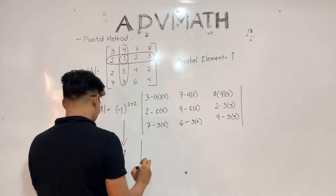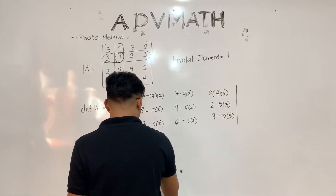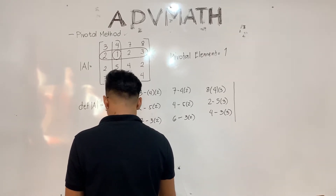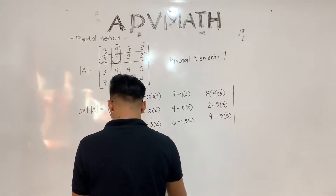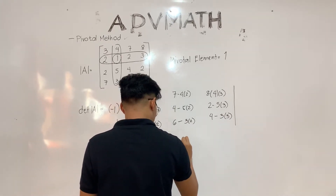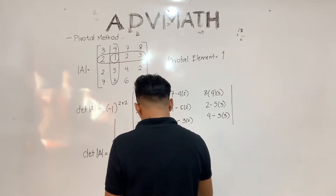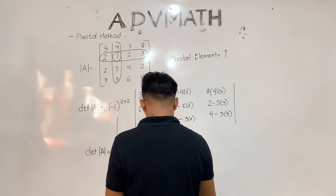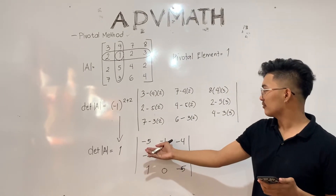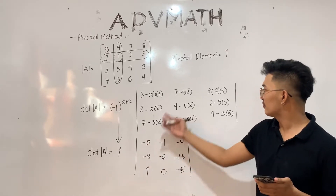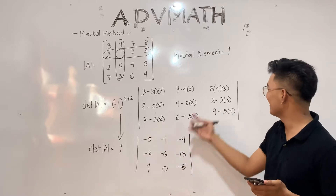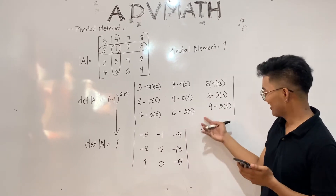We need to carefully solve the 3 by 3 matrix to get the right answer. Use a calculator as much as possible. As we simplify, we will get: negative 5, negative 8, 1, negative 1, negative 6, 0, negative 4, negative 13, and negative 5.